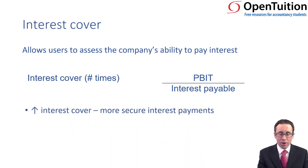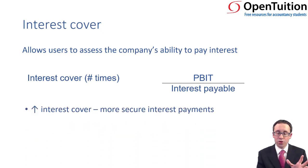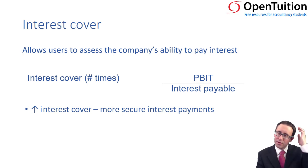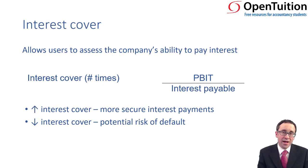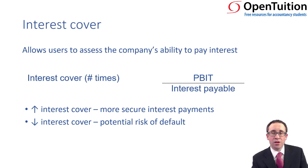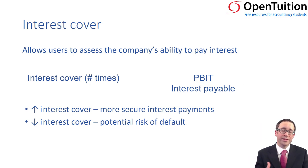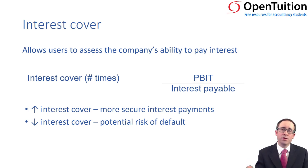If interest cover has gone up, that's good — your interest payments are more secure, there's more scope, and even if profits fall there's still enough to cover the interest. But if it's gone down, there's a risk you can't cover your interest. If you can't pay the interest, you may default on the loan and the loan can be recalled — that's a massive risk for the business, very significant in terms of reputational damage and your ability to raise future debt finance.